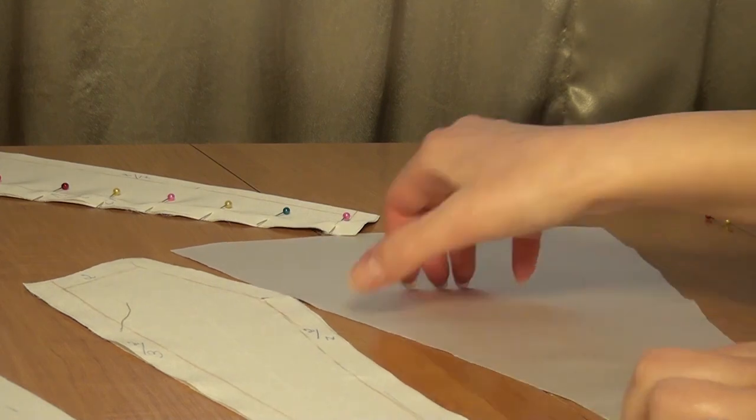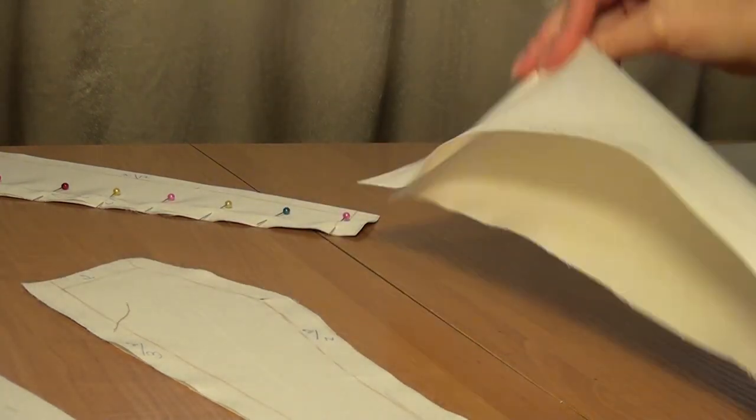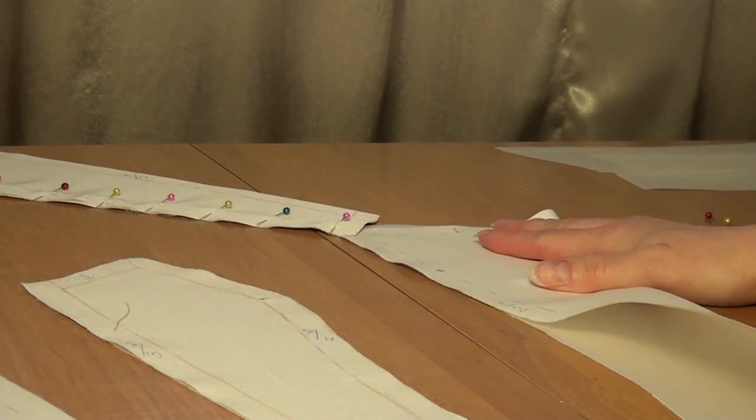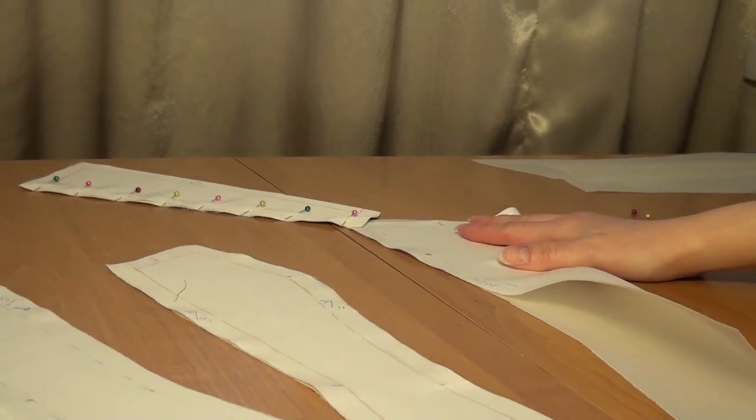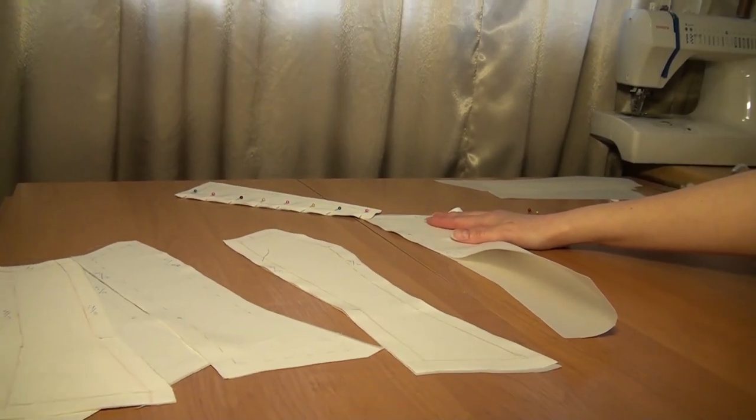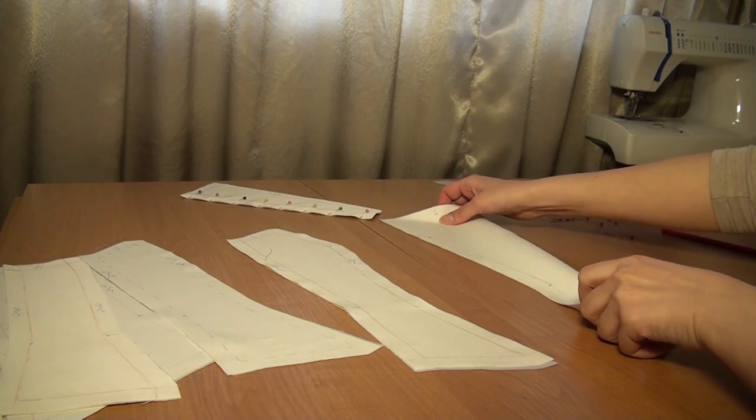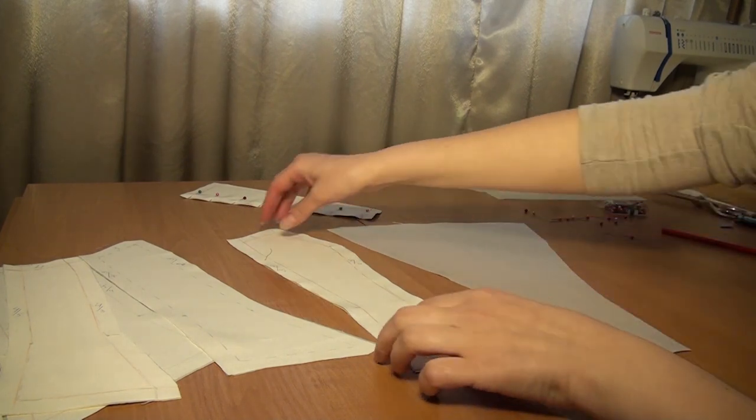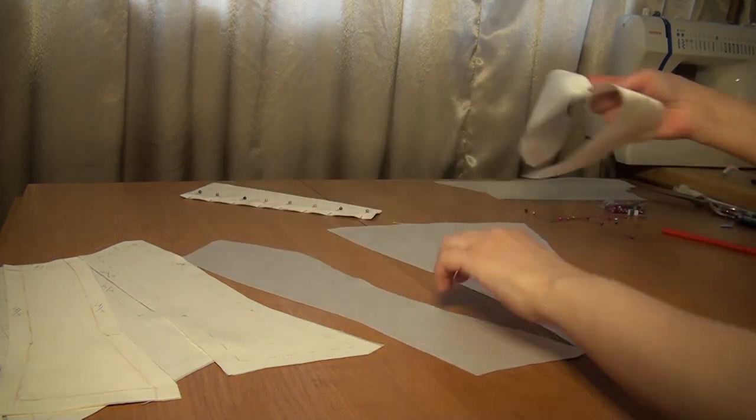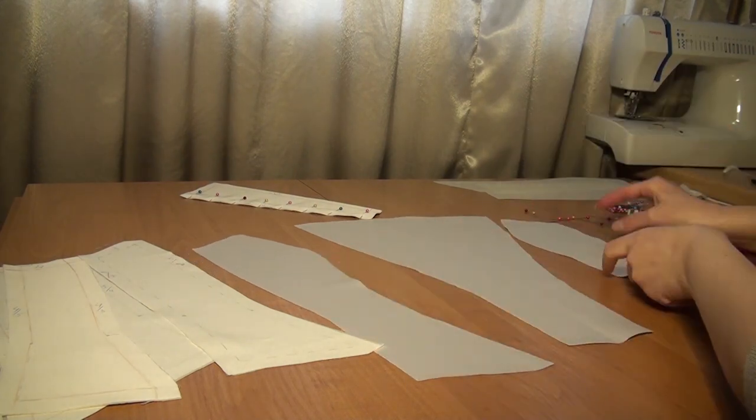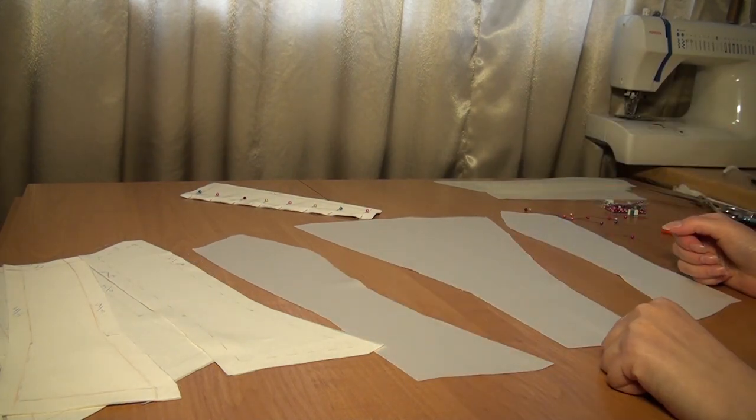This is detail number one. Along the line of the middle of the front there is a fold, not a seam. Therefore, detail number one is only one piece. All other details are all cut out into pieces.